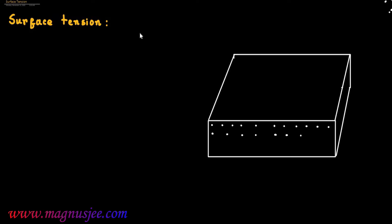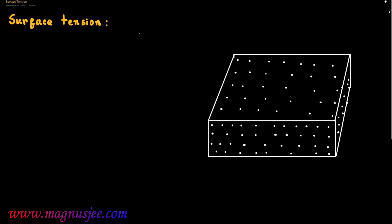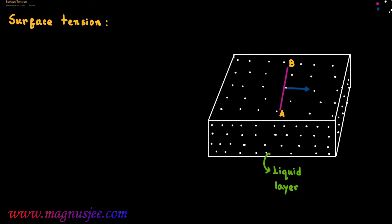Surface tension. In the diagram, we have a layer of liquid which is at rest. We can consider an imaginary line — this imaginary tangent A-B is on the free surface of liquid at rest. A force acts at right angles to both sides of this imaginary line. This force acts tangentially to the free surface of the liquid.